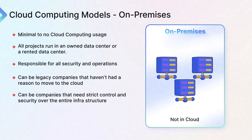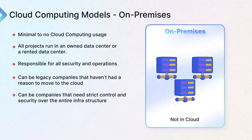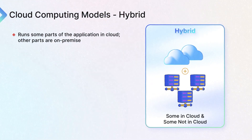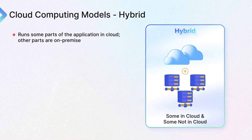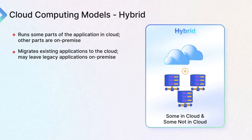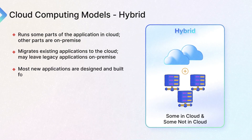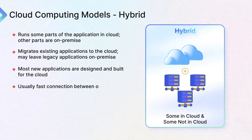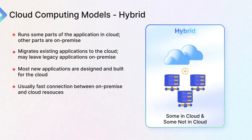It can be companies that need strict control and security over their entire infrastructure. For example, if you're working for the government, you can't really just use public cloud because the government is going to want you to keep things relatively locked down and in your control, not exposed to unknown parties. And then there's also a hybrid model, where you run some of it in the cloud, some of it out of cloud, migrate some applications to the cloud, and might leave others alone. But most new applications are designed and built for the cloud. In this model, there's usually a very fast connection between the on-premise traditional data center resources and the cloud resources.